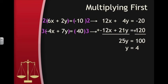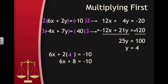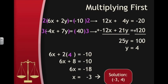Now that we know the y coordinate of our solution, we need to substitute it into one of the equations to find the value of x. We can substitute it into either of the two original equations, so I'll use the first one to get 6x plus 2 times 4 equals negative 10. This gives us 6x plus 8 equals negative 10, so we can subtract 8 from both sides to get 6x equals negative 18, then divide both sides by 6 to get x equals negative 3. Now we have our final answer. The solution is the point (negative 3, 4).